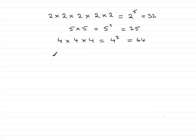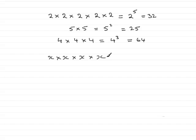What happens if we had something like this? Let's take an algebraic version rather than numerical. Suppose we had x times x times x times x, where x represented a number — the same number, obviously — repeatedly multiplied by itself 4 times over. We would write this then as x to the power 4.